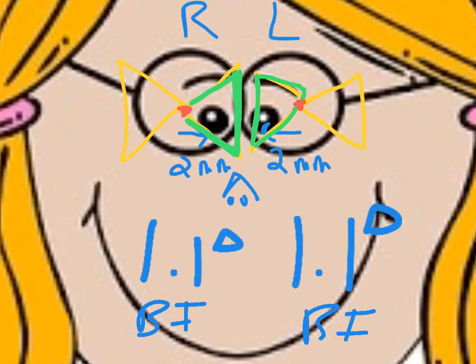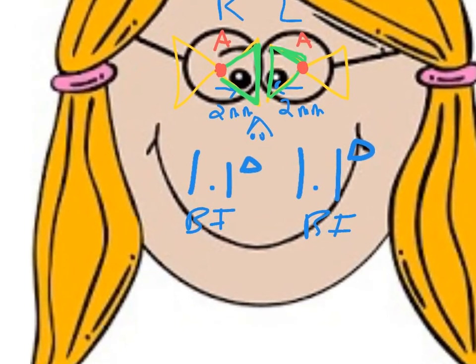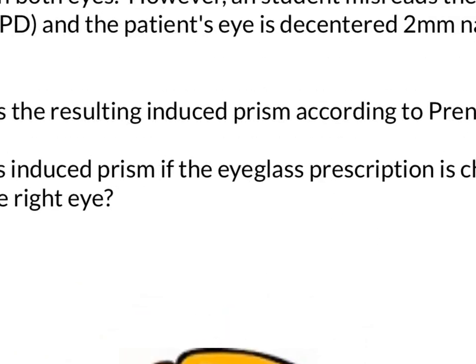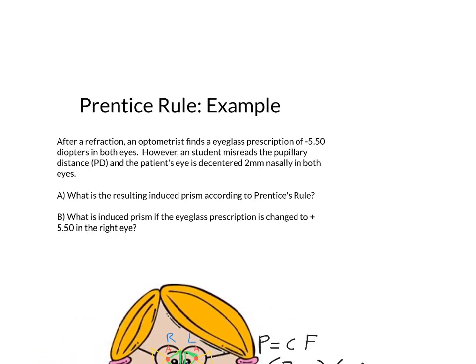This is an important concept to remember. The apex of the prism in the right eye and the apex in the left eye are pointing in opposite directions — therefore you add. I made a video on subtracting and adding prisms; I'll provide a link in the upper right of this video. So the total induced prism — the total prismatic effect — is 2.2 prism diopters. The answer to part A is 2.2 prism diopters base in.